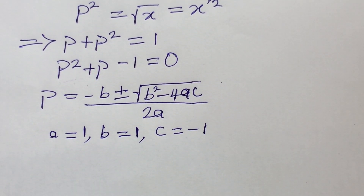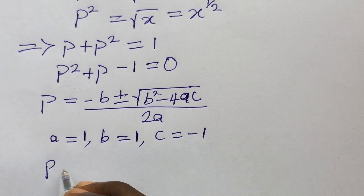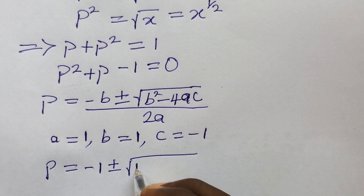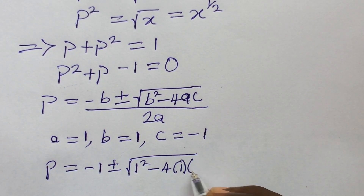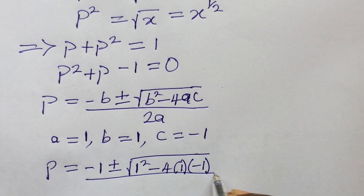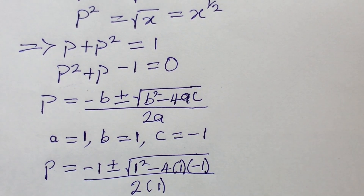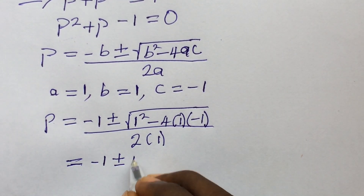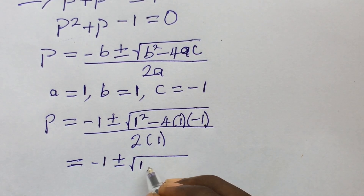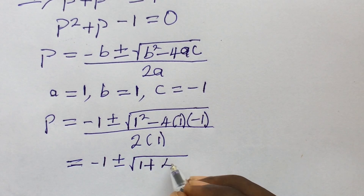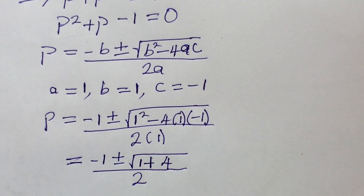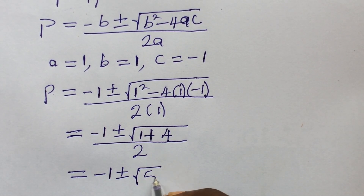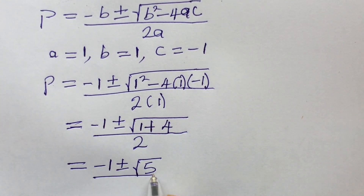Substituting into the quadratic formula: p equals negative 1 plus or minus the square root of 1 squared minus 4 times 1 times negative 1, all over 2 times 1. Opening up: the square root of 1 plus 4 gives us the square root of 5. So p equals negative 1 plus or minus the square root of 5, all over 2.